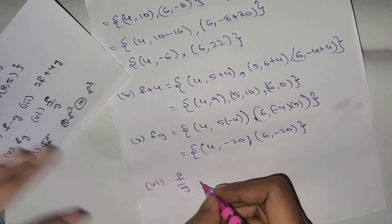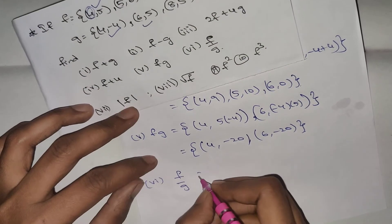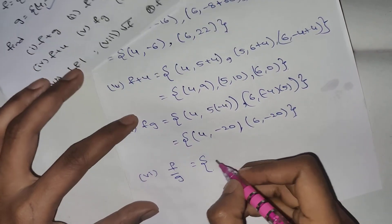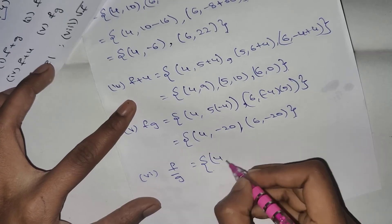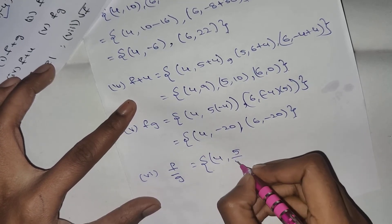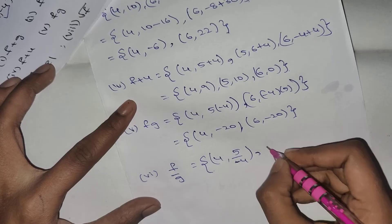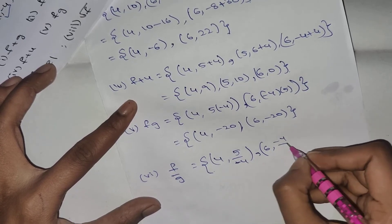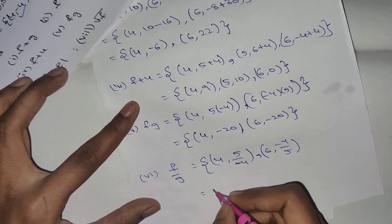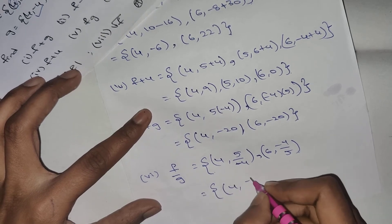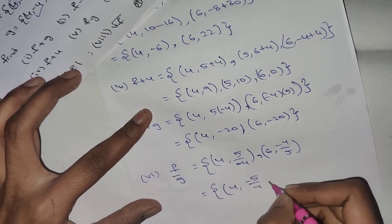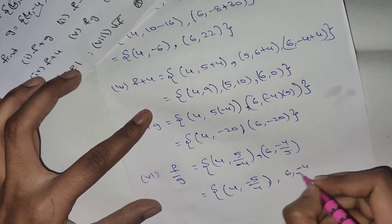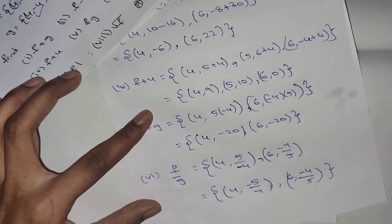F by G — same. F by G: (4, 5 by minus 4), (6, minus 4 by 5), (4, minus 5 by 4), (6, minus 4 by 5). This is the answer.